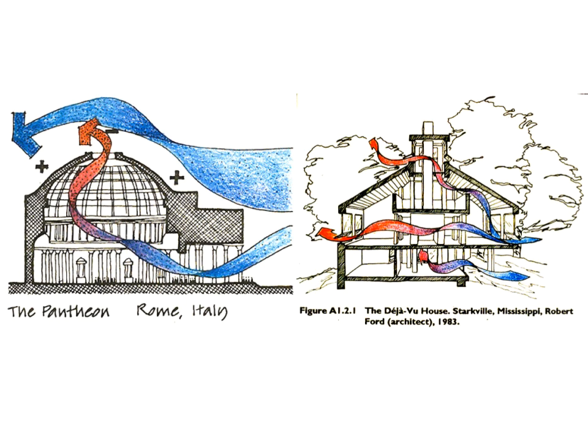Stack ventilation works on the buoyancy or stack effect. As the building gains heat from conduction, solar radiation, lights, people, and equipment, the indoor air warms up and rises. If there's a place for it to exit, it sucks in cooler outdoor air at the bottom, and that cycle continues.